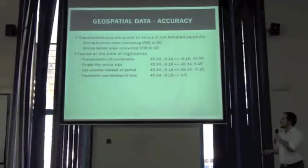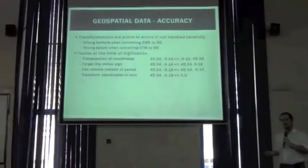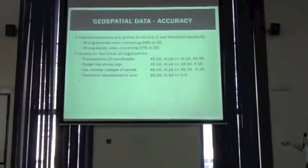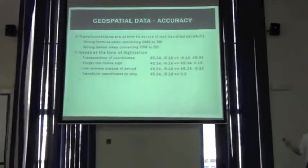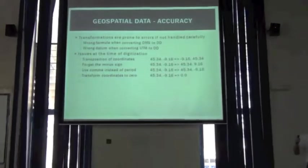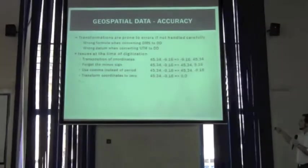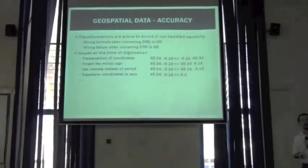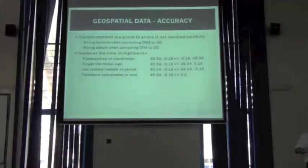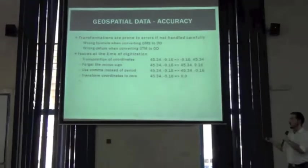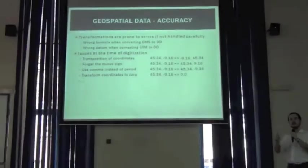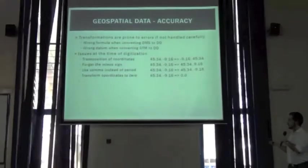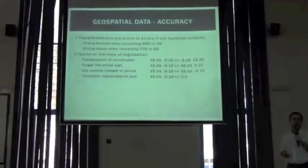At the time of digitization, several issues can appear. For example, we can change the order of coordinates with longitude first and latitude last, or we can ignore or forget about the sign when working with south and west hemispheres. We can also use different symbols as decimal separators or any other issue that might introduce inaccuracies in our geospatial information.